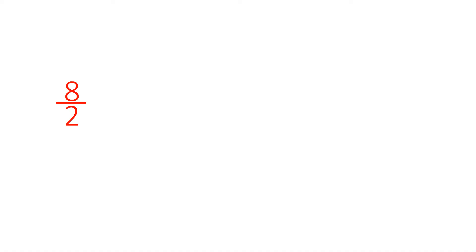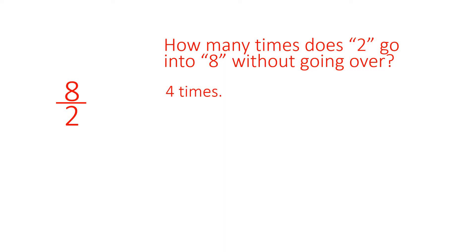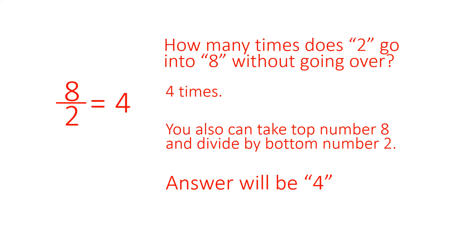Here we have improper fraction where the top number is bigger than the denominator, the bottom number. So we ask, how many times does 2 go into 8 without going over? 2, 4, 6, 8. That is 4 times. And you could also take the top number, 8, and divide it by the bottom number, 2. 8 divided by 2, the answer will be 4.